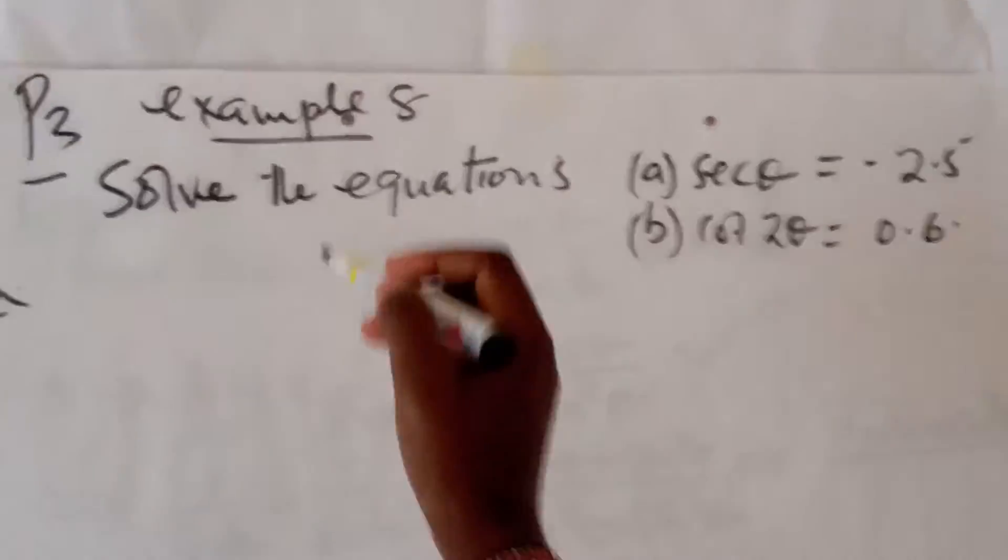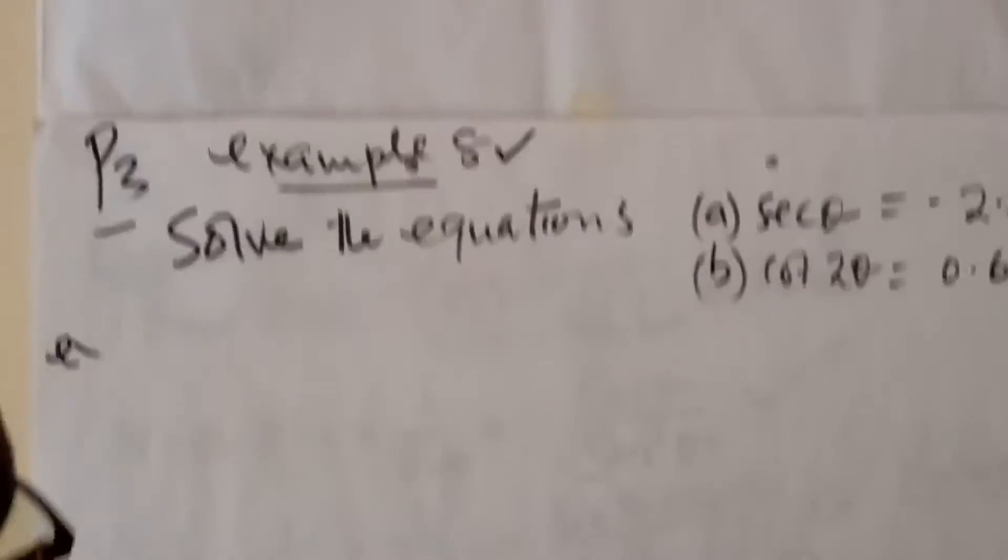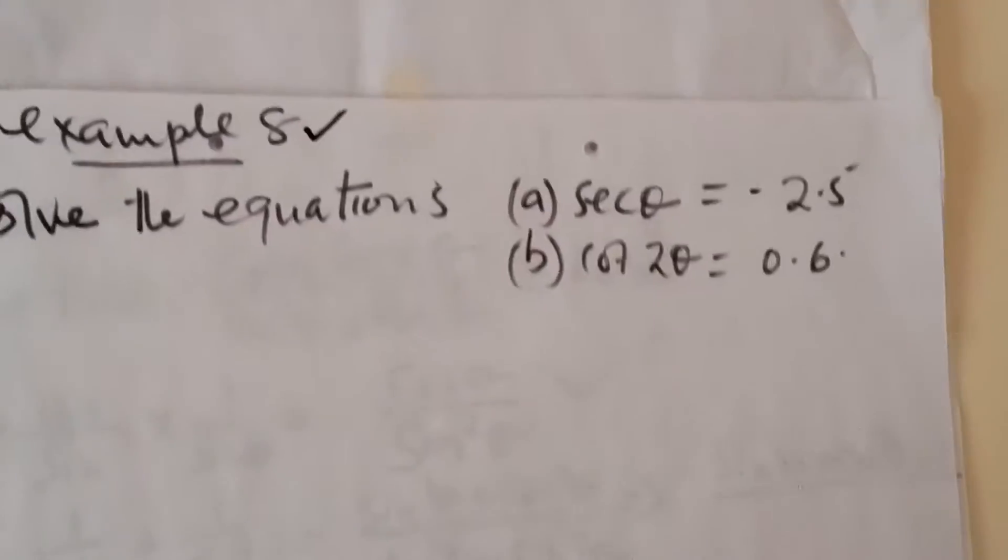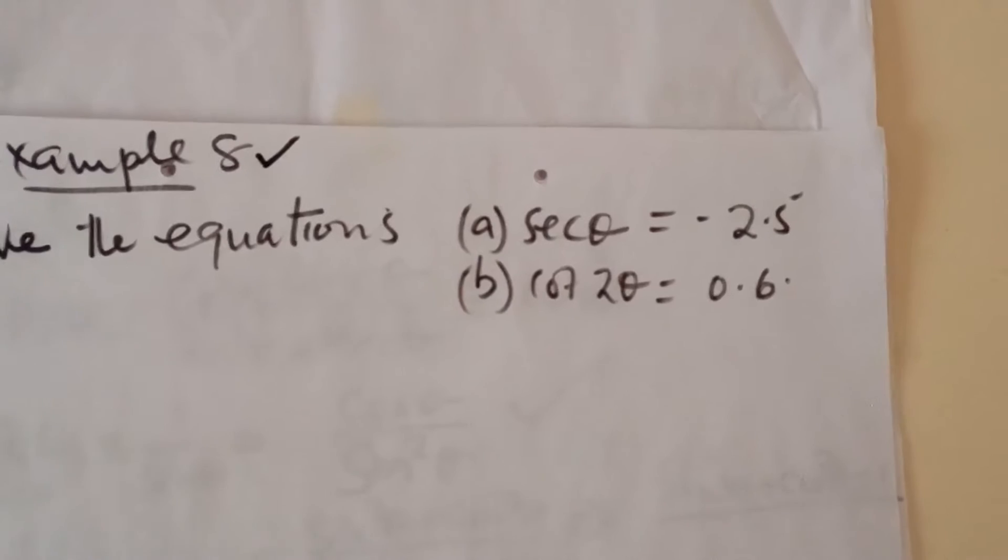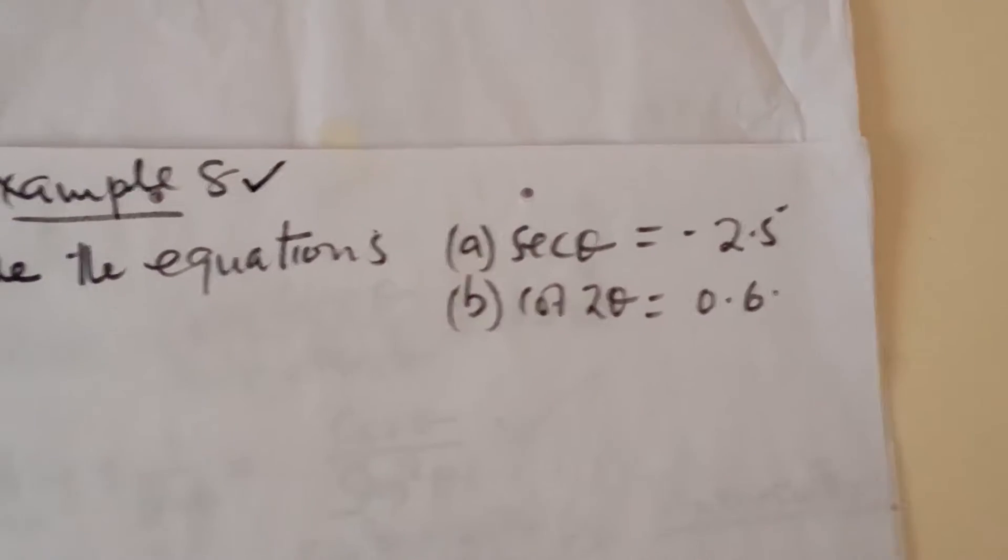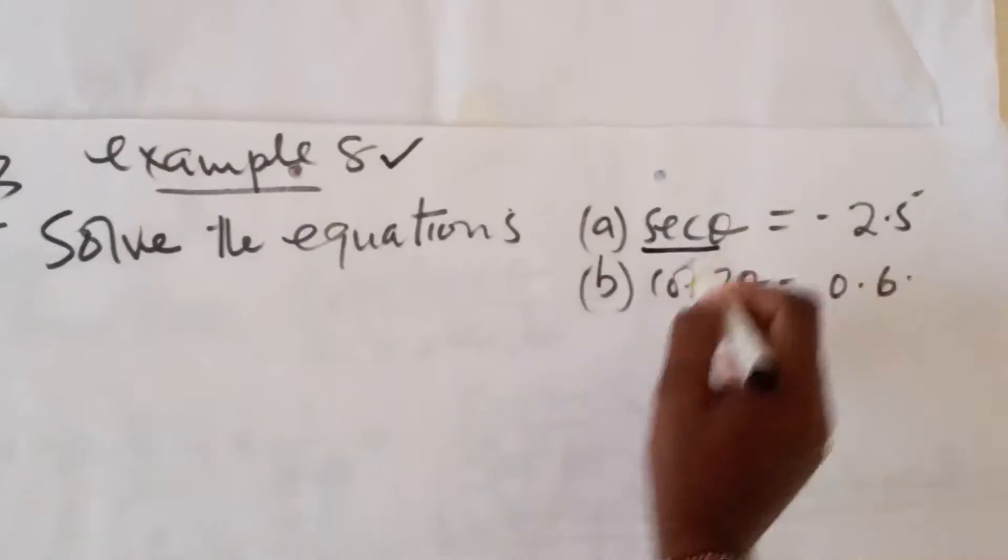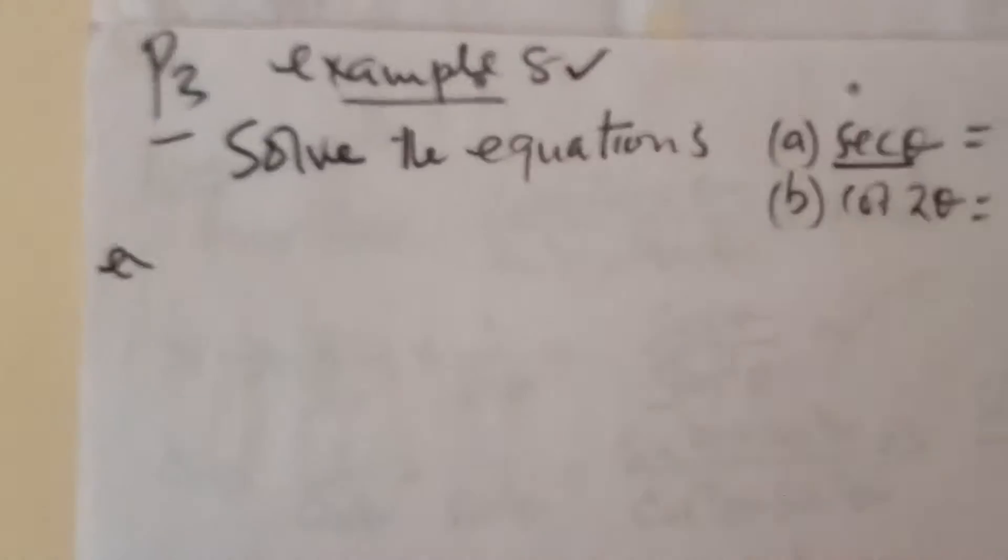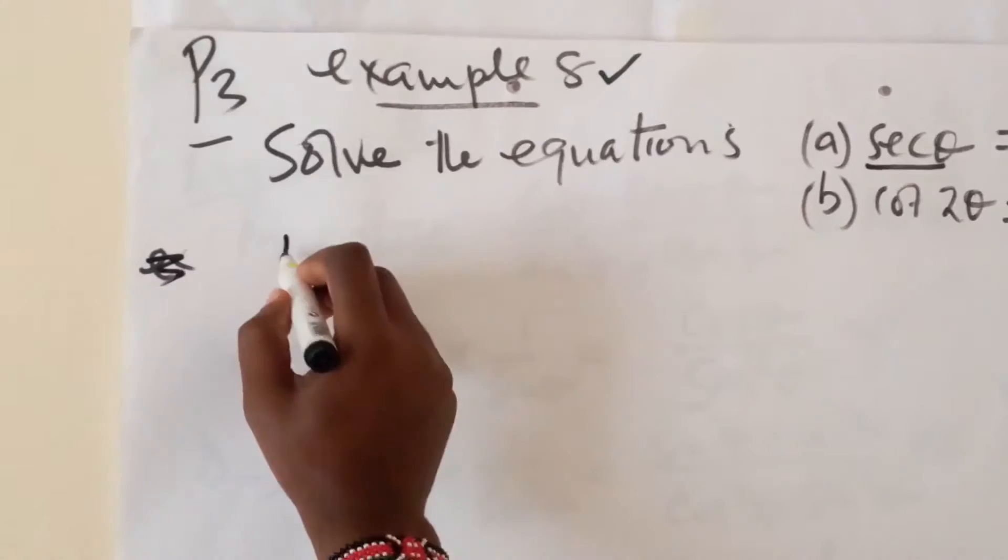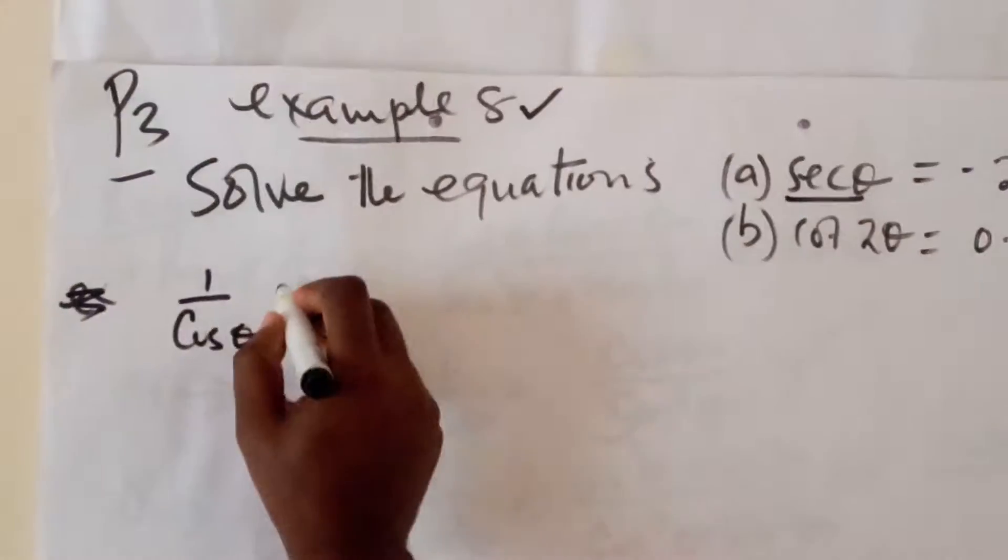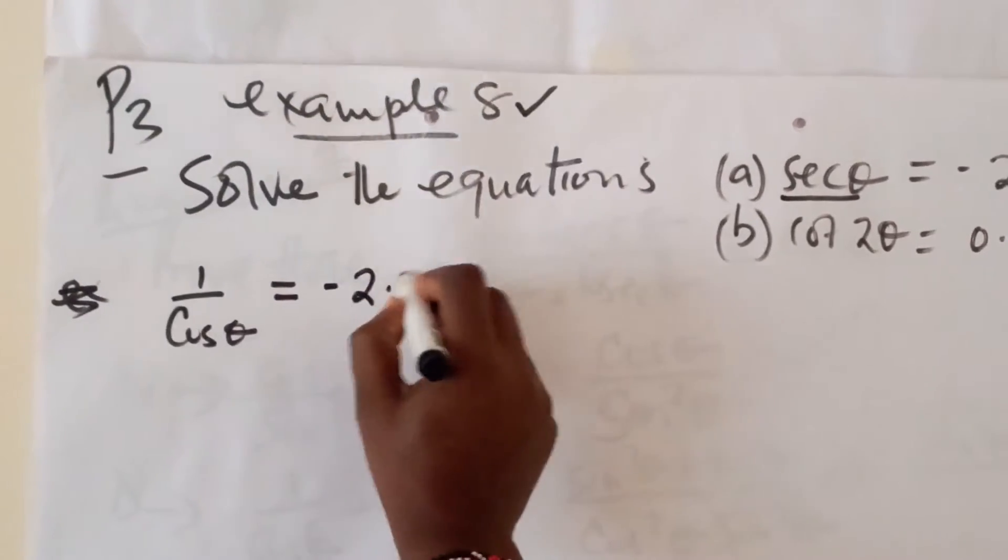In example 8, we are expected to solve these equations. Sec theta equals negative 2.5. Primarily, we know that sec theta is simply 1 over the cosine of theta, which is negative 2.5.